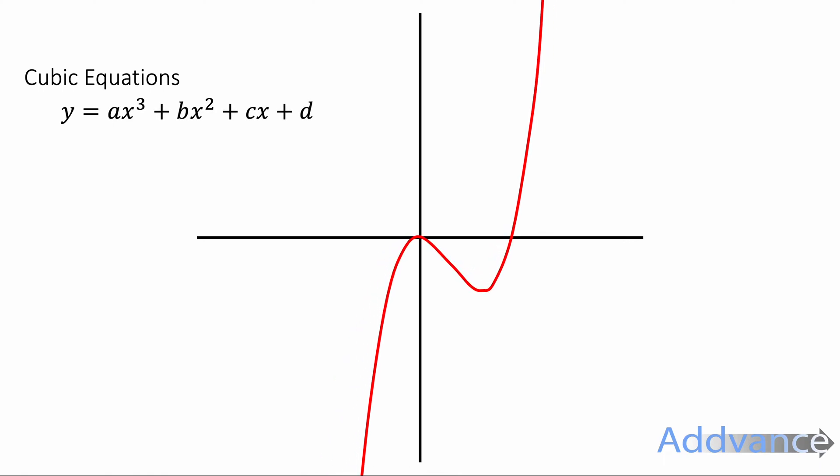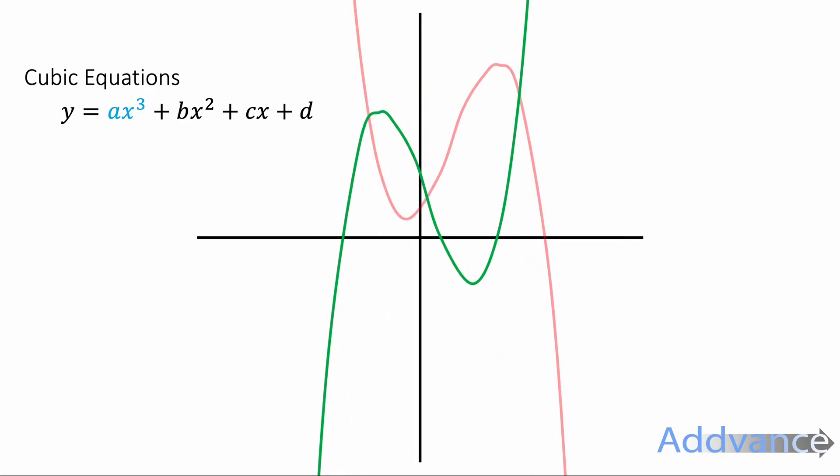If there were more terms, an x² or an x term, it would start to have bumps in the curve like this. It could also look like this or like that. There's different types of cubic graphs that all have slightly different shapes.